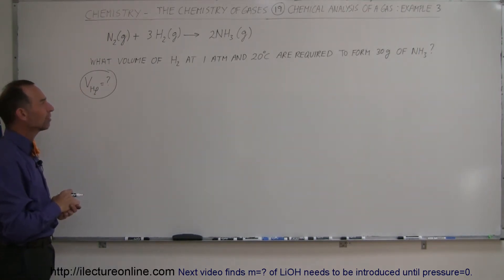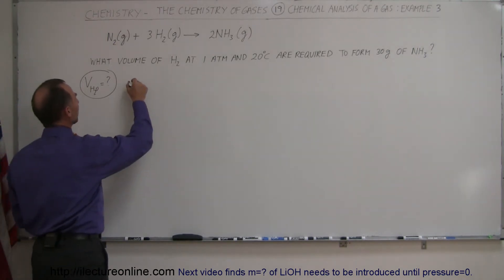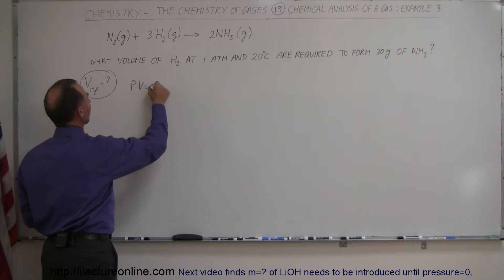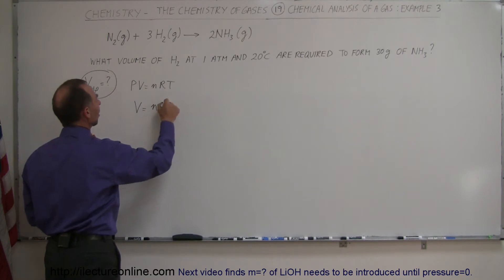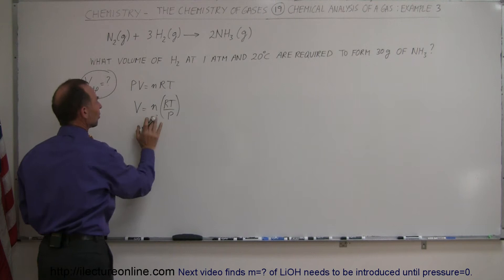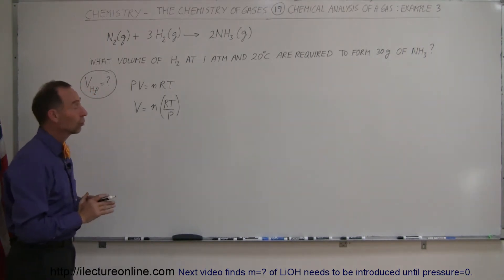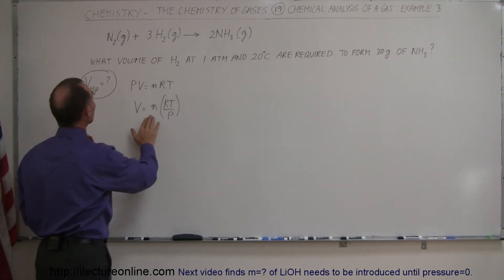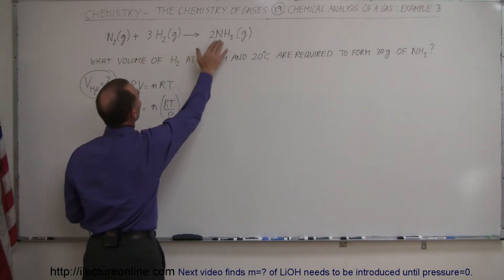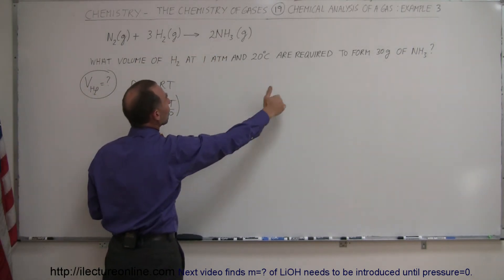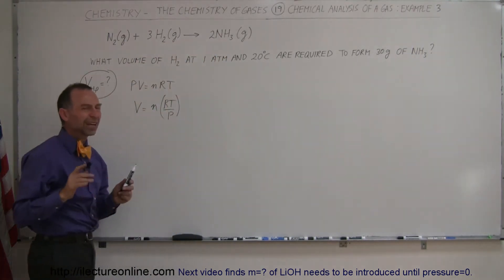Well it looks like to find the volume of gas we're probably going to need the ideal gas equation. We need the PV equals nRT equation which means that the volume is equal to the number of moles times RT over the pressure. So I'm going to put that in parenthesis here because the key here is the number of moles because we're going to be able to relate the number of moles of hydrogen to the number of moles of ammonia and then to the number of grams of ammonia. So that's kind of the strategy.